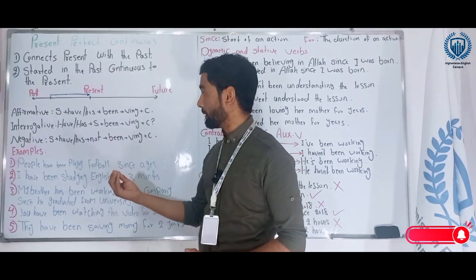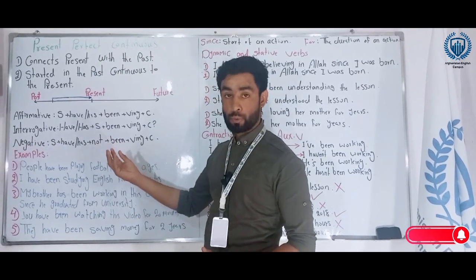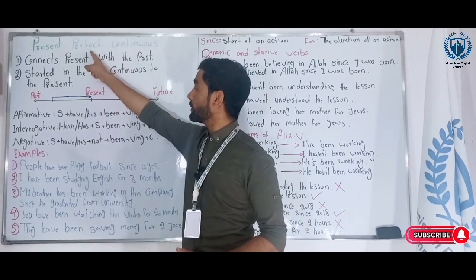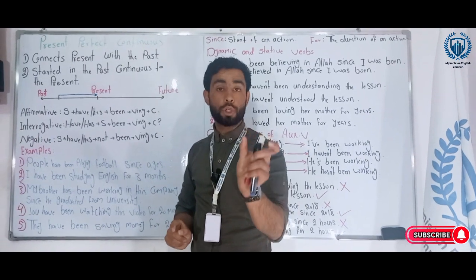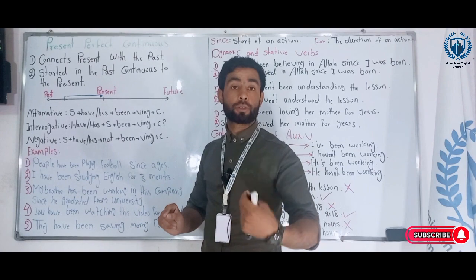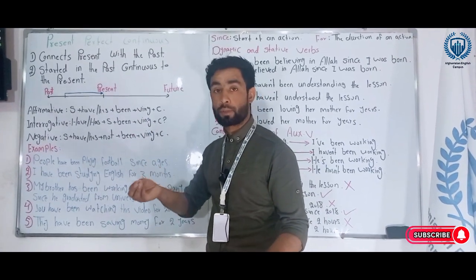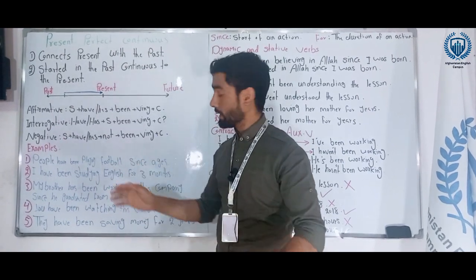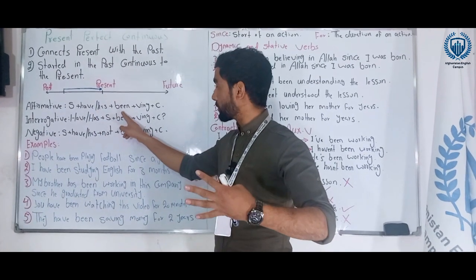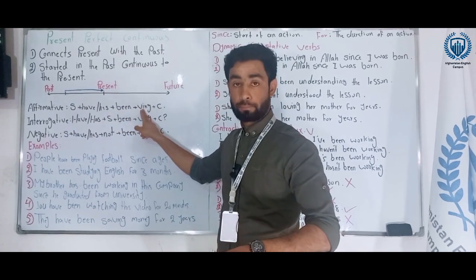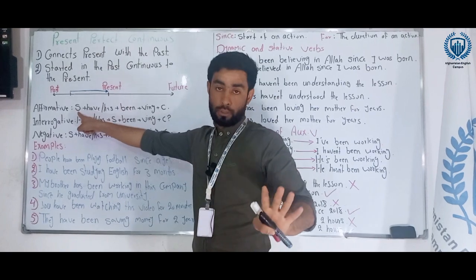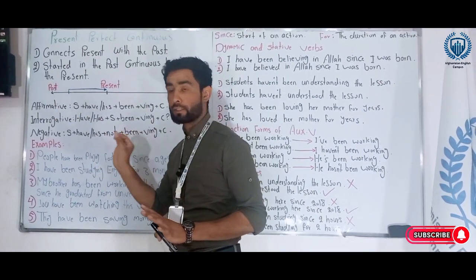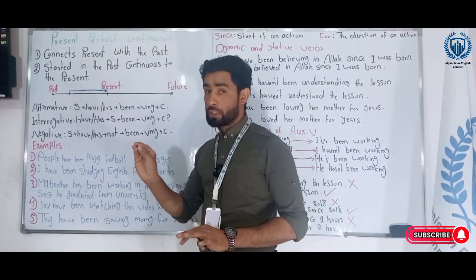Present perfect continuous has a structure to be used correctly. Since it's a mix of perfect and continuous tenses, we need the auxiliary verbs 'have' and 'has' from perfect tenses, the 'to be' verb 'been' and the verb -ing (present participle) from continuous tenses. The affirmative structure is: Subject + have/has + been + verb-ing + complement.